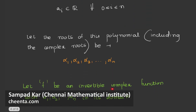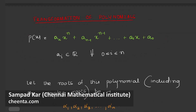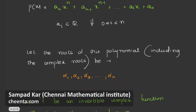Now let f be an invertible complex function with alpha_1, alpha_2, alpha_3, dot dot dot alpha_n in its domain. We want to find the corresponding transformation of p of x, say q of x, such that q of x has f of alpha_1, f of alpha_2, and f of alpha_n as its roots. So this is a very important question of interest. We need to know how to transform p of x into some other polynomial q of x which has f of alpha_1, f of alpha_2, dot dot dot f of alpha_n as its roots.